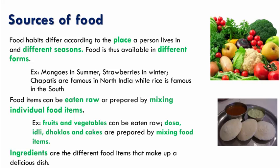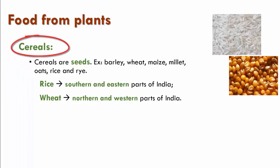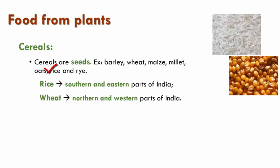Food can be obtained from both plants and animals. Let us first look at foods obtained from plants. Cereals are seeds mostly obtained from grasses such as barley, wheat, maize, millet, oats, rice and rye.